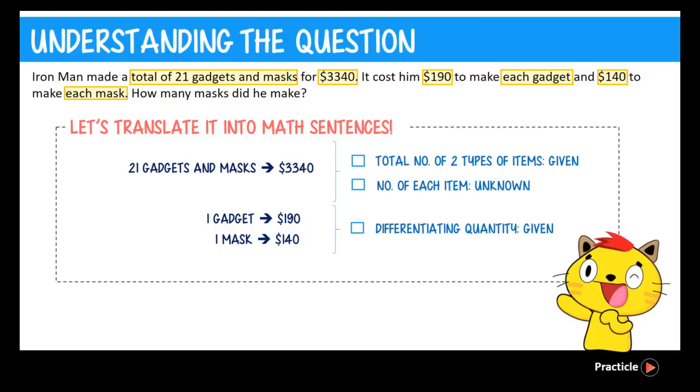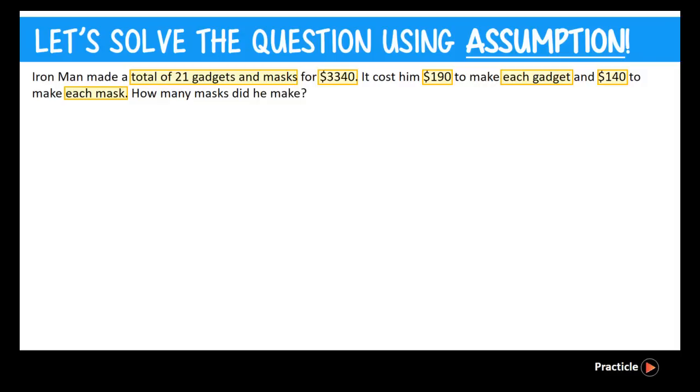Do you want to guess what method we are going to use to solve this question? Yes, obviously, we are going to use the assumption method. Now comes the exciting part, where we can see the assumption method in action. What do you understand by the word assumption? The word assumption comes from the word assume, which means to pretend. So now, let's pretend that all the items that Iron Man made were actually gadgets, and he didn't make any masks at all.